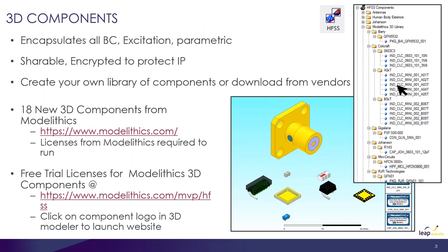For HFSS updates, you can now use 3D components where you can encapsulate all boundary conditions and excitations, and make components parametric. It also provides an entire library to choose from different manufacturers. For example, if you have a PCB with a connector, capacitor, or inductor on top, you can use these as 3D components, create your own library, or choose from vendors such as Modelytics.